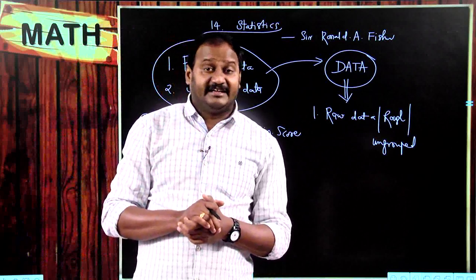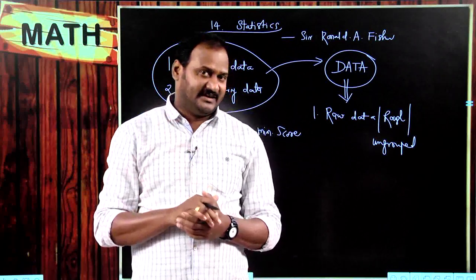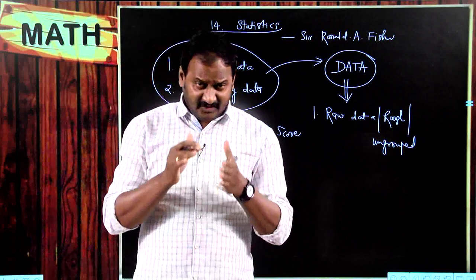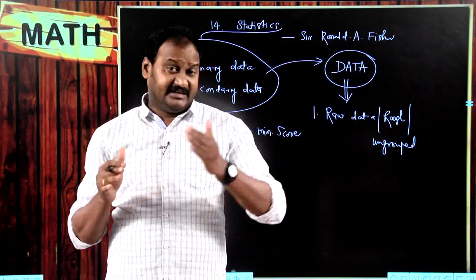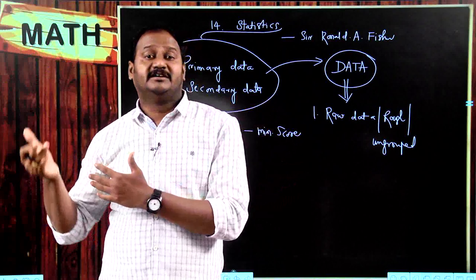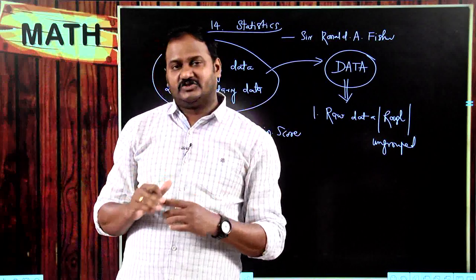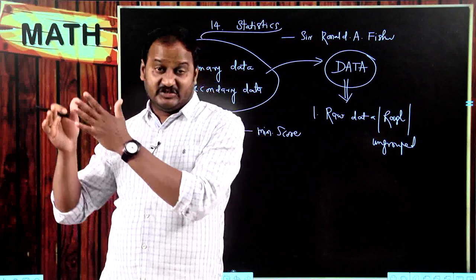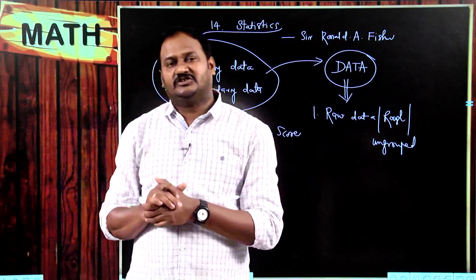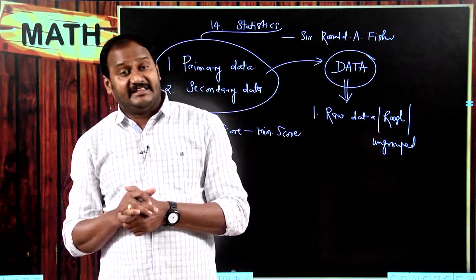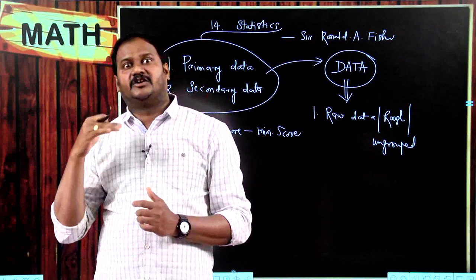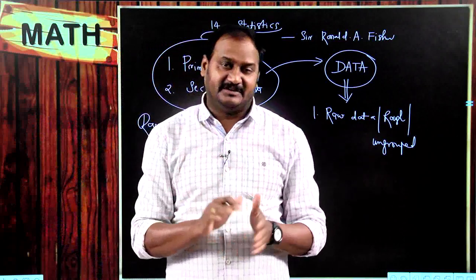Then what is the range of the first n whole numbers? The first n whole numbers start from 0 and end at n minus 1, because the last nth whole number is n minus 1. So the range is (n minus 1) minus 0, which equals n minus 1. Importantly, the range of the first n natural numbers and the range of the first n whole numbers are both equal to n minus 1.